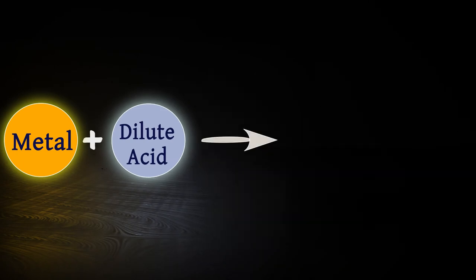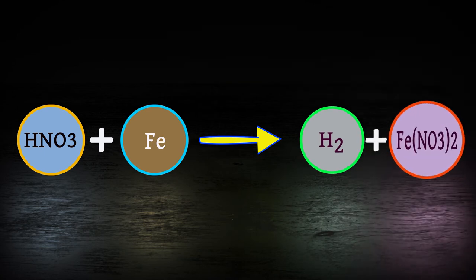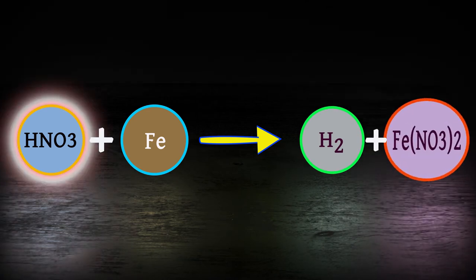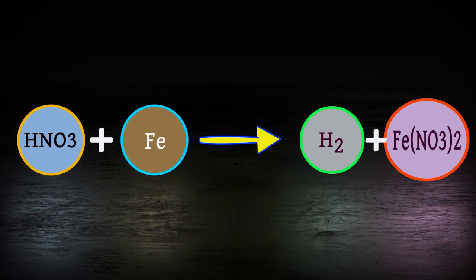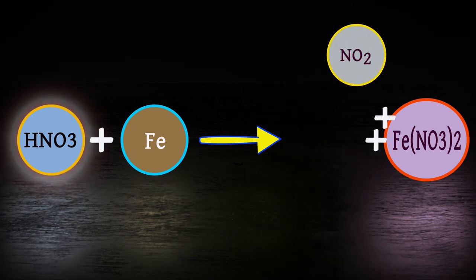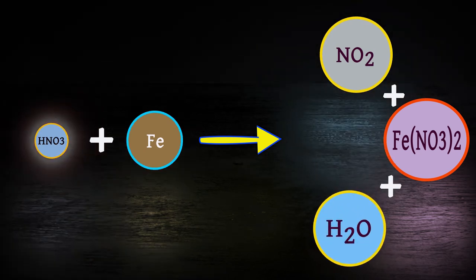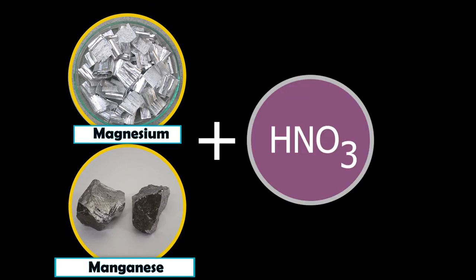Metals react with acid to form salt and hydrogen gas, but hydrogen gas is not evolved when a metal reacts with nitric acid. It is because nitric acid is a strong oxidizing agent. It oxidizes the hydrogen produced to water and itself gets reduced to any of the nitrogen oxides. Magnesium and manganese react with very dilute nitric acid to evolve hydrogen gas.